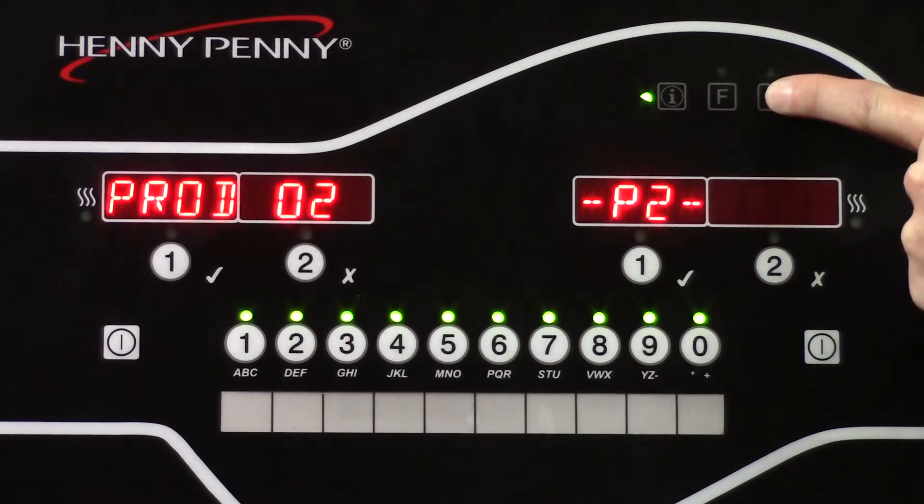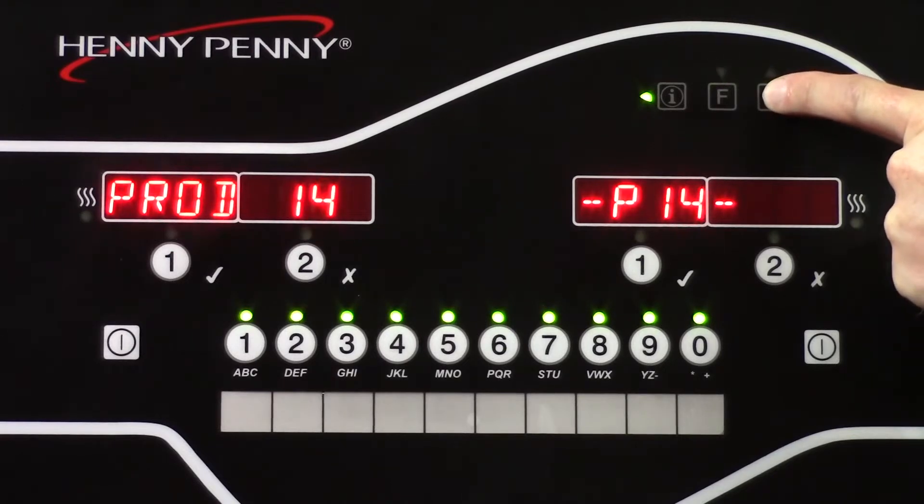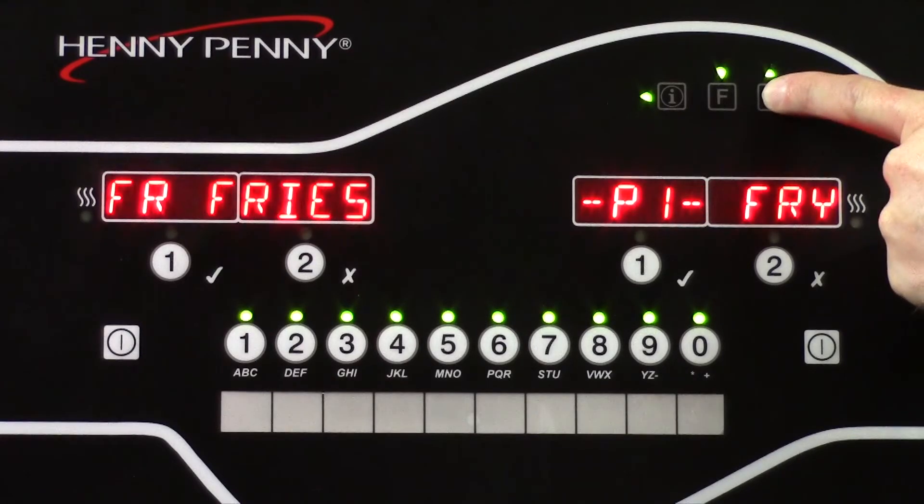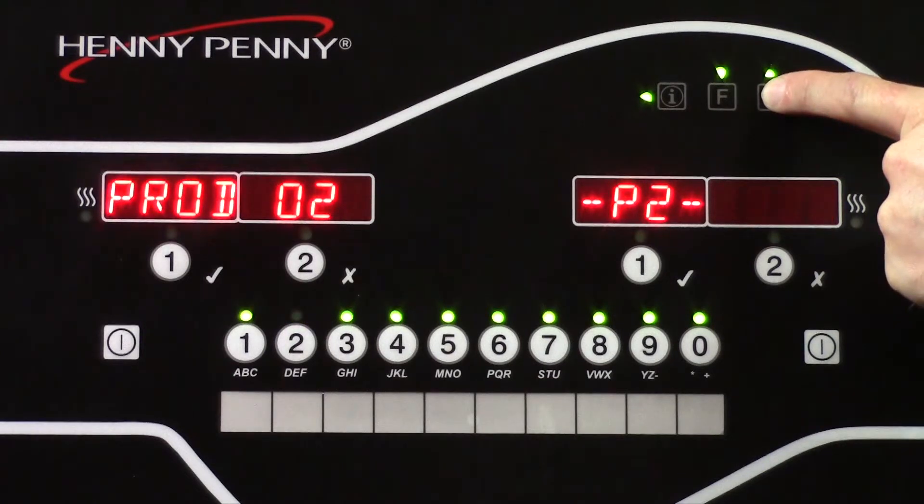Next, scroll through the products until you find an open product. Open products are usually indicated by PROD02, PROD03, etc. The only product on our control that currently has anything programmed to it is product 1. As you can see, it is set to Fries. For this example, we are going to program our strips to PROD02.